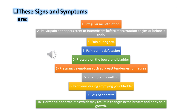Common signs and symptoms include: irregular menstruation, pelvic pain either persistent or intermittent before or after menstruation, pain during sex, pain during defecation, pressure on the bowel and bladder, pregnancy symptoms such as breast tenderness or nausea, bloating and swelling, problems emptying the bladder, loss of appetite, and hormonal abnormalities which may result in changes in the body.